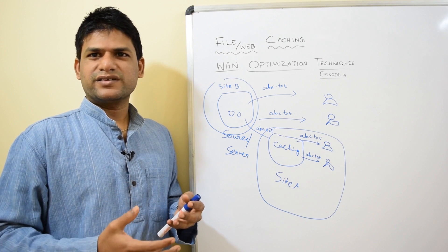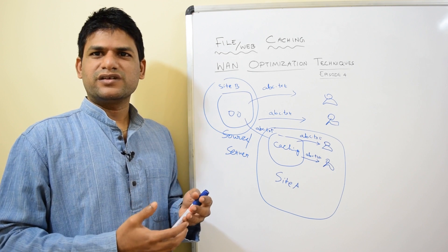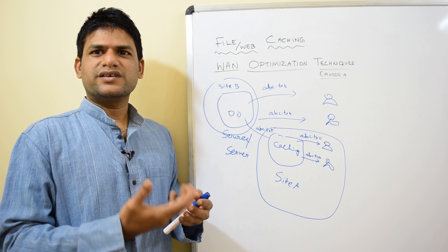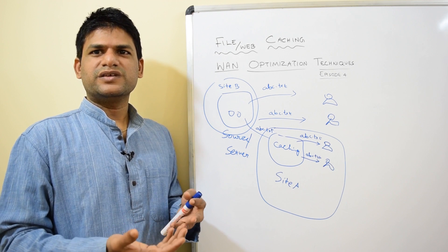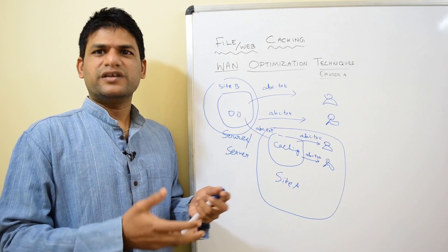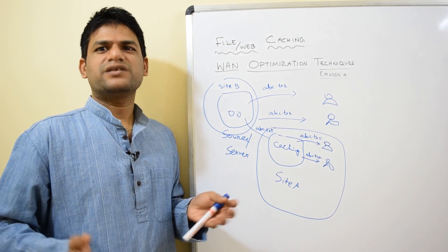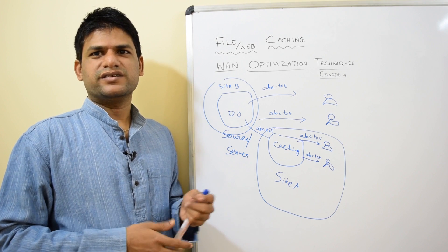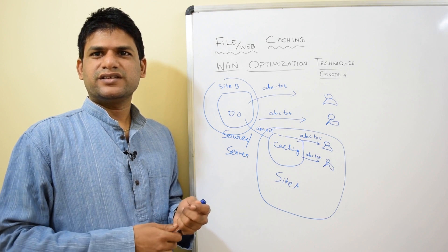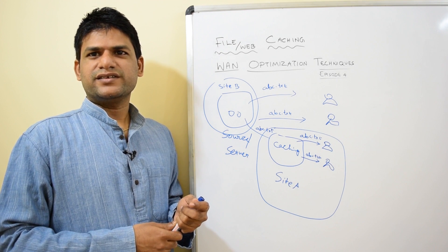The challenge is how do you optimize this kind of data, which is a blend of any kind of protocols and packets. One of the biggest limitations with file caching is that it is highly protocol-dependent and application-protocol-dependent. If it is web data, caching must be done for web data; if it is FTP, it should be for FTP; if it is SSL, that's a completely different approach; and for CIFS and other protocols, it's different again.